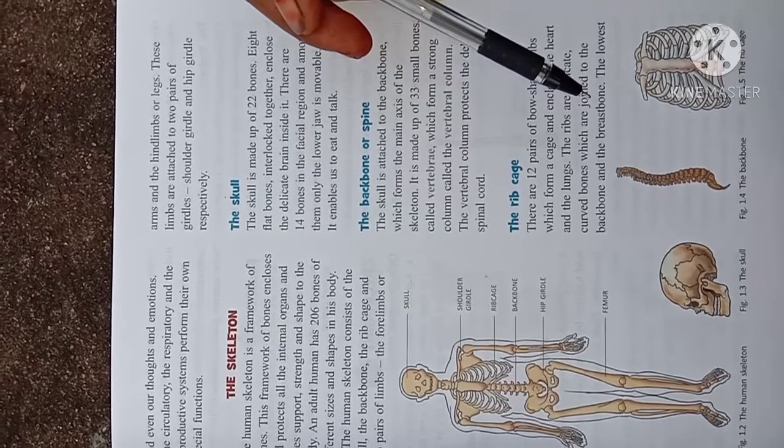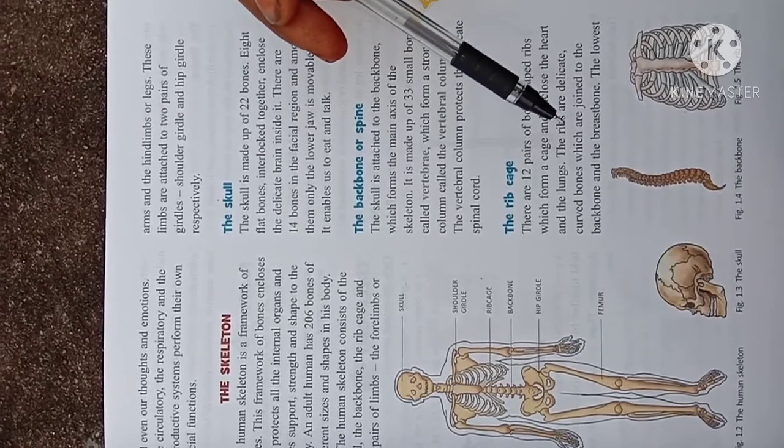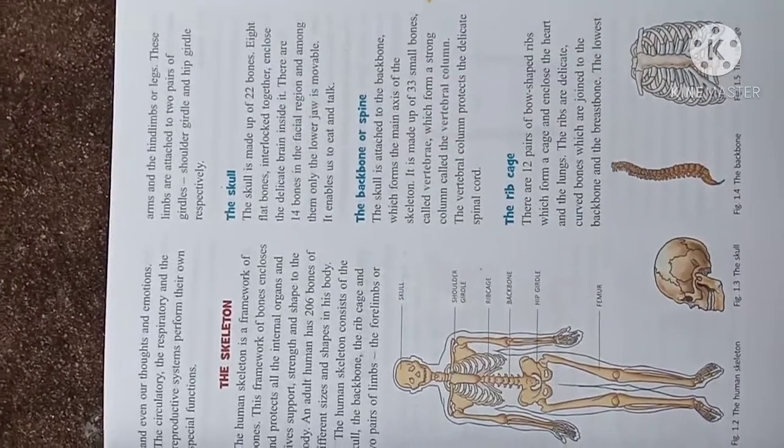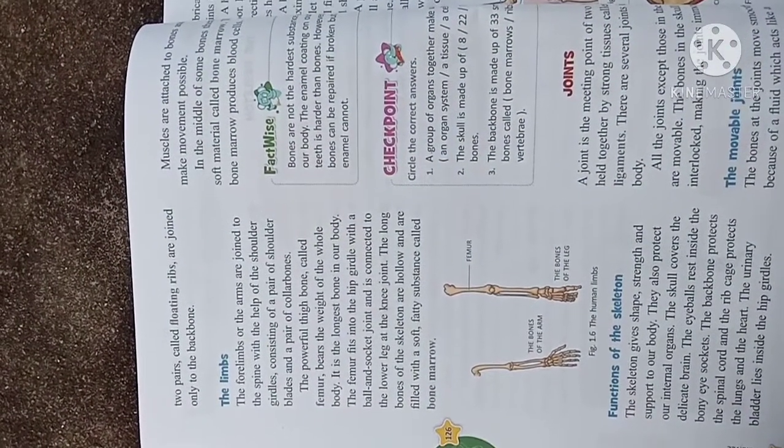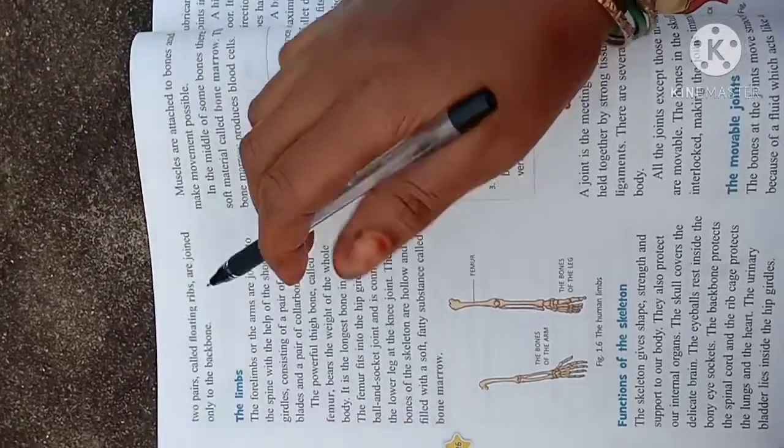The lowest two pairs called floating ribs are joined only to the backbone.